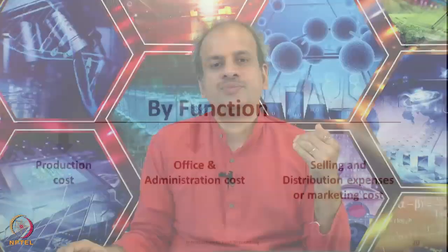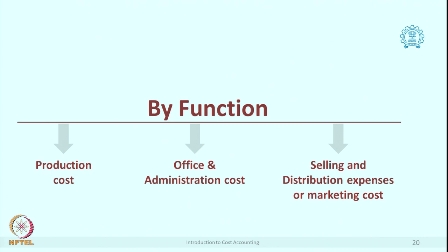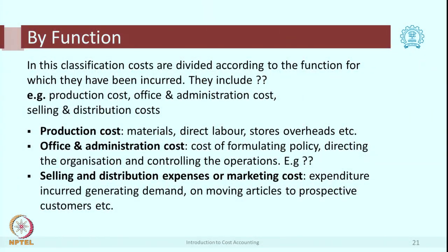This is a very basic classification from where we have evolved, and we go for a further classification as per function. Important business functions like production, administration, selling, distribution, and R&D — the business is normally divided into units as per the functions. So cost is also classified as per the function: production cost, admin cost, marketing cost, and so on.